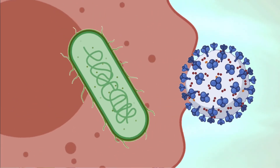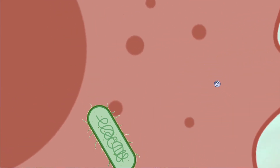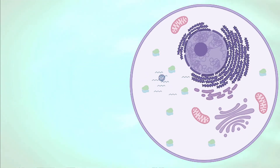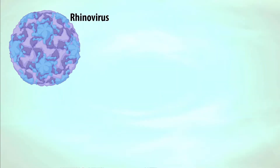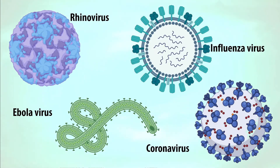Viruses are a little different. They're about 10 times smaller than bacteria and they can't grow or reproduce on their own. To grow, viruses need to get inside a host cell and use them to make new viruses. They can make millions of copies a day inside us and spread to more of our own cells or spread to other people making them sick. The common cold, Ebola, seasonal flu, and COVID-19 are all viral infections.